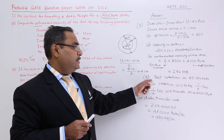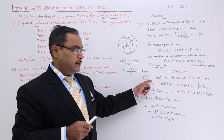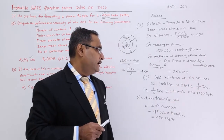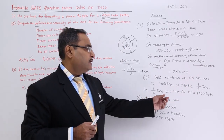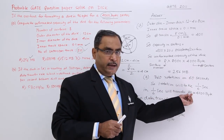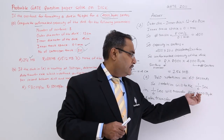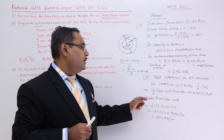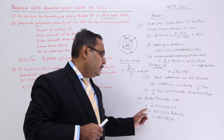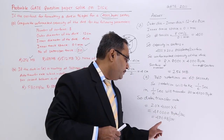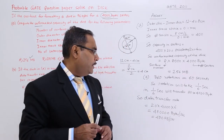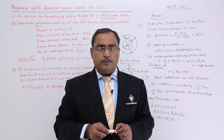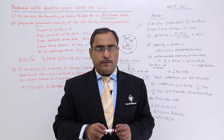For part B: 360 rotations in 60 seconds, so one rotation takes 1/6 second. In 1/6 second it transfers 20 sectors × 4000 bytes per sector. Multiplying by 6 gives 480 KB per second. In this way both problems are solved. Thanks for watching this video.